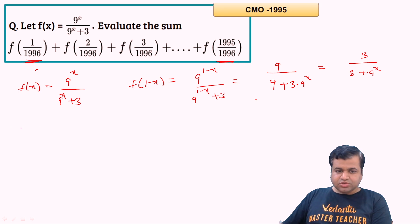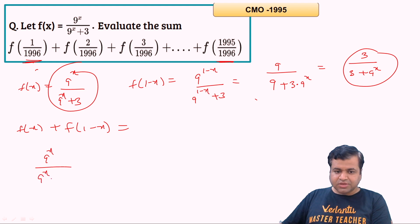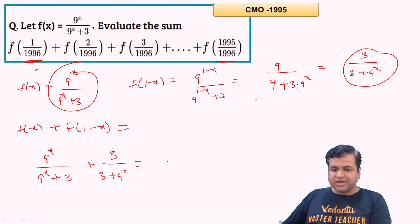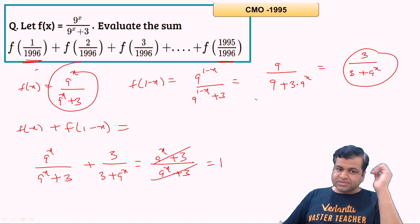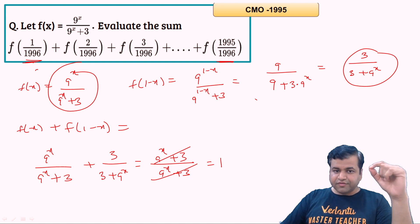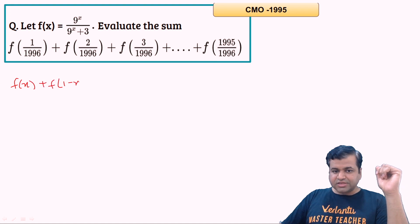Now if we add f(x) + f(1 − x), we get 9^x/(9^x + 3) + 3/(3 + 9^x). The denominators are the same, so the numerators simply add to give (9^x + 3)/(9^x + 3) = 1. So we have proved that f(x) + f(1 − x) = 1.